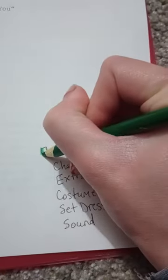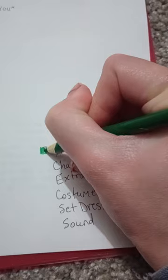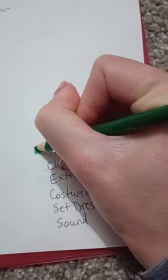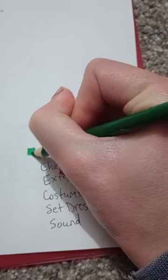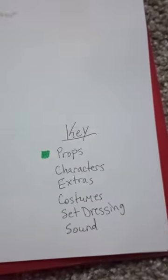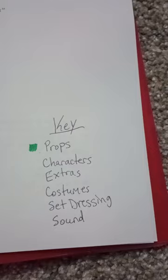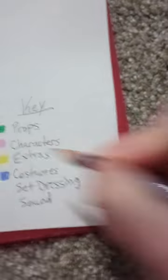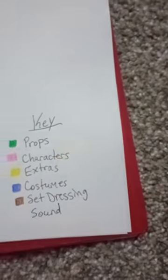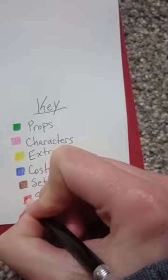Now color code your list. For example, I will be highlighting all the props in green, so I will make a green box next to props. The color you choose for your item doesn't matter as long as it isn't matching another color already being used.